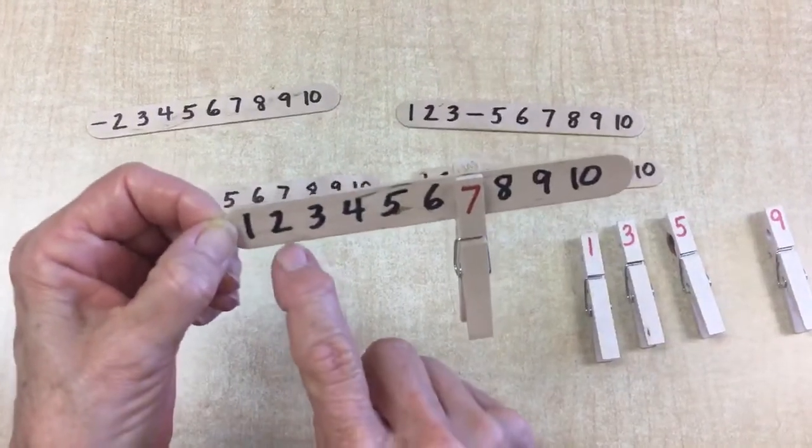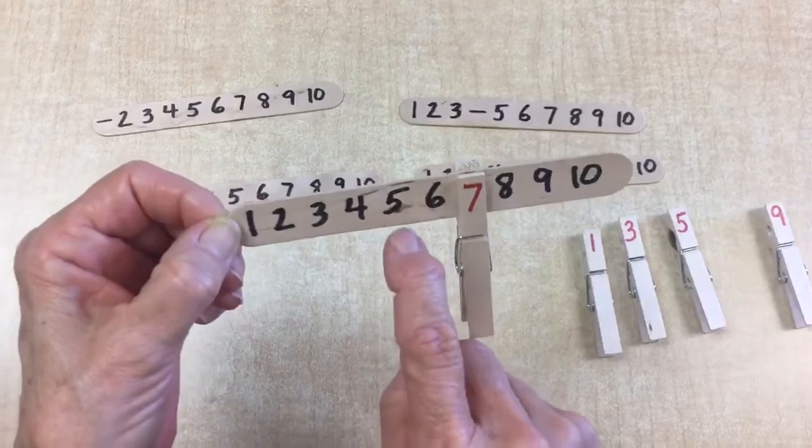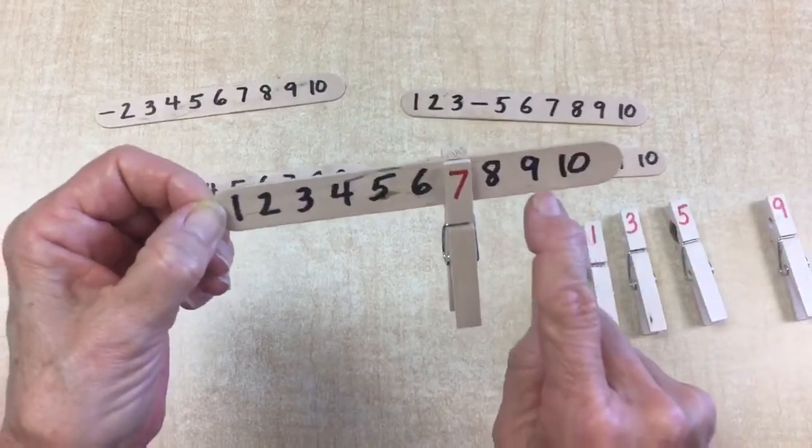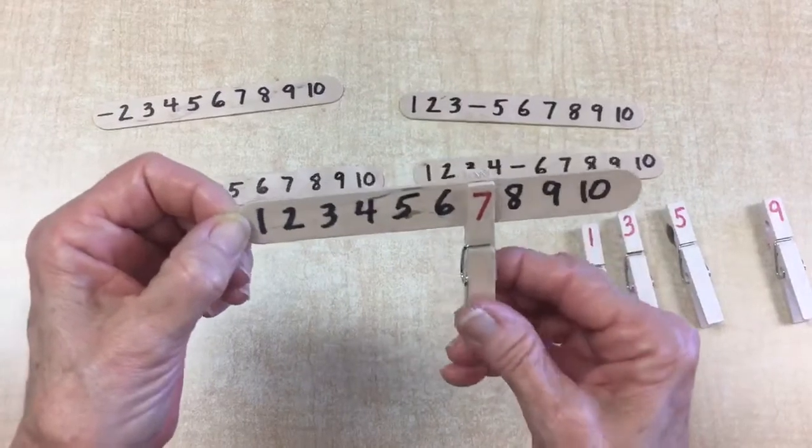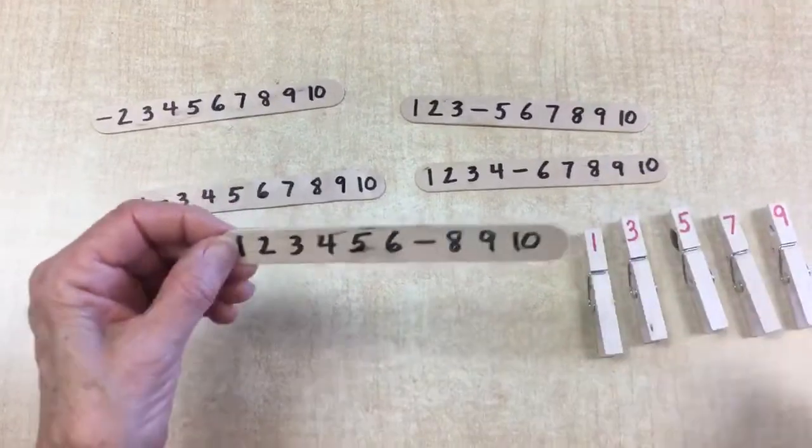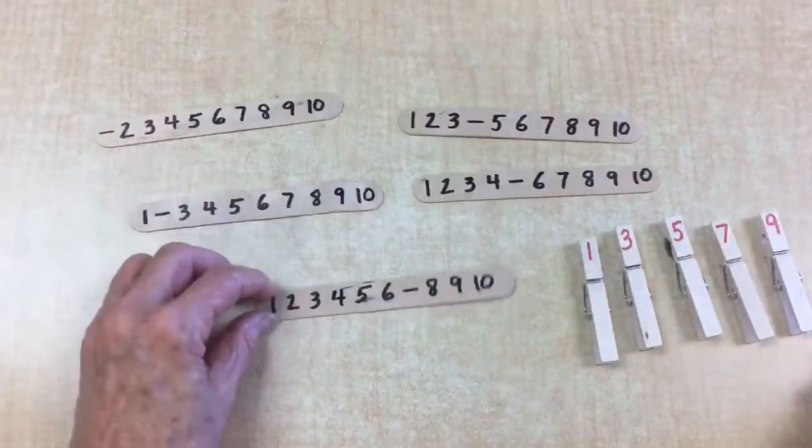1, 2, 3, 4, 5, 6, 7, 8, 9, 10. And you can continue this little game with all of your popsicle sticks, front and back, and your clothespins. Have fun.